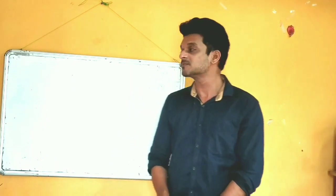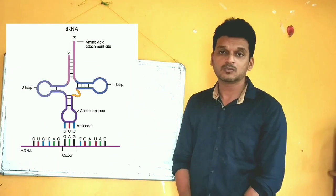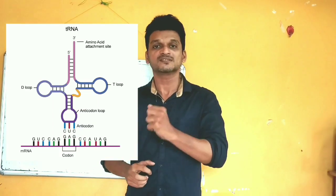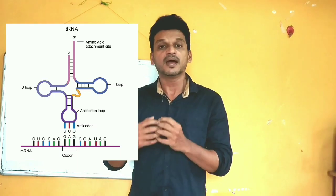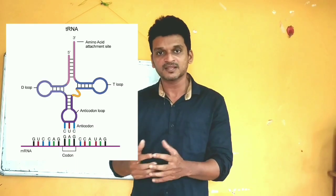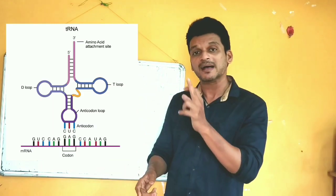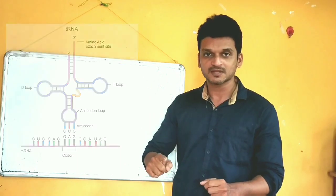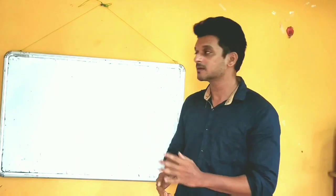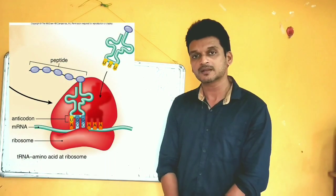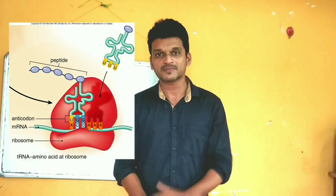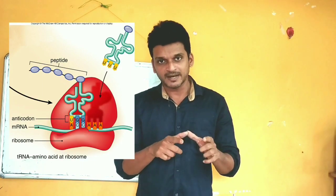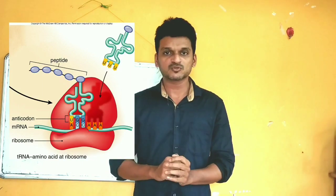Our second RNA is transfer RNA. All proteins are made up of amino acids, so for the formation and synthesis of protein, amino acids are necessary. These amino acids are supplied by the transfer RNA. As per the message on mRNA, this transfer RNA will supply amino acids. Our final RNA is ribosomal RNA. This ribosomal RNA is part of ribosomes that are attached on the endoplasmic reticulum. The amino acids supplied by tRNA will be taken to ribosomal RNA.